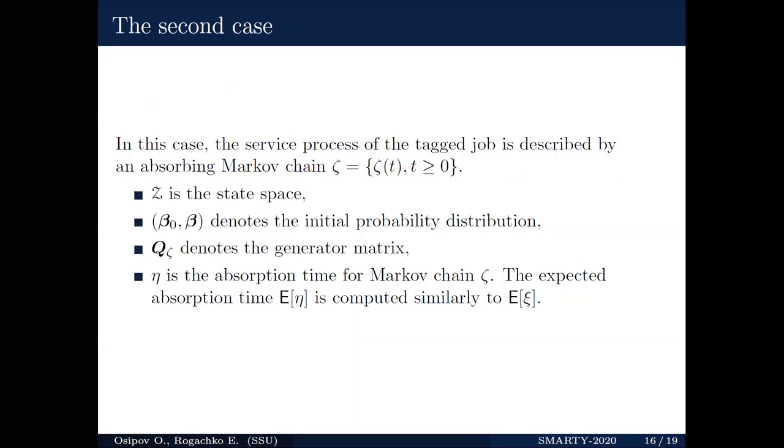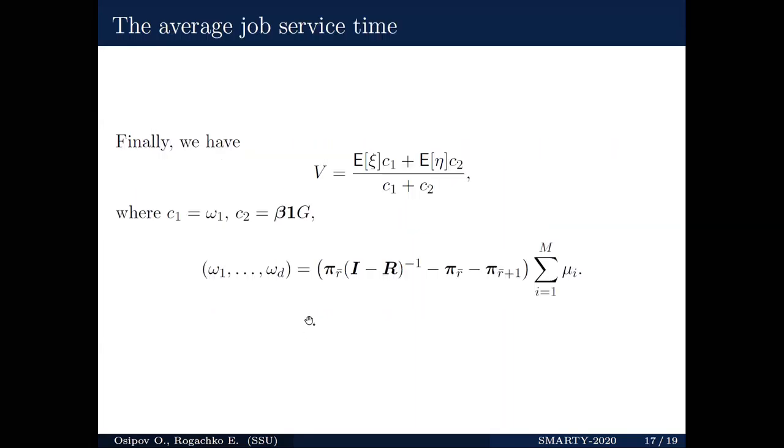Let us now turn to the second case. We can apply a similar approach and we will not stay on this case in detail. Assume we have the state space, we have initial distribution and we have the generator. So we can obtain the expected absorption time. And now, combining these two cases, combining these two values, we can obtain the expected absorption time for the average job service time.